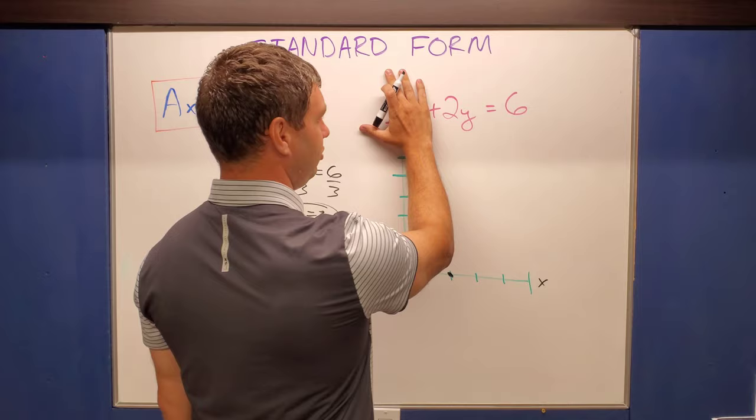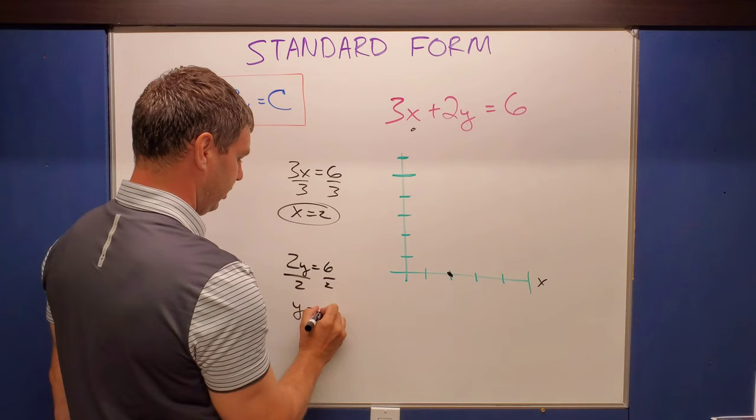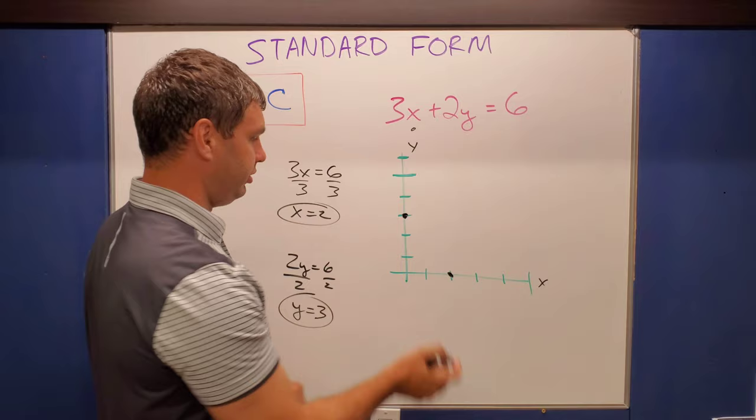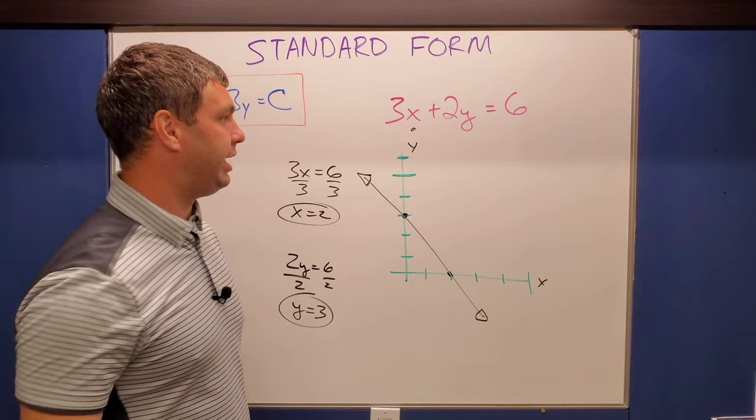Anyway, I'm left with two y equals six. If I solve for that, divide both sides by two, then y equals three. So on my y-axis, I can go up three, one, two, three, put a dot there, and then connect the two dots that I have on either axis. And that's going to make the line that represents the graph for this equation, three x plus two y equals six.